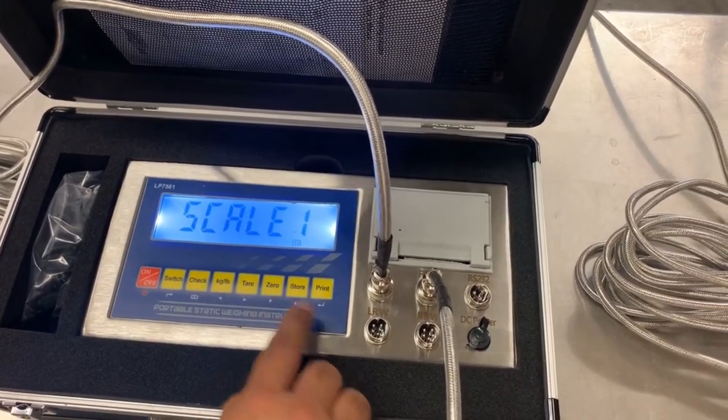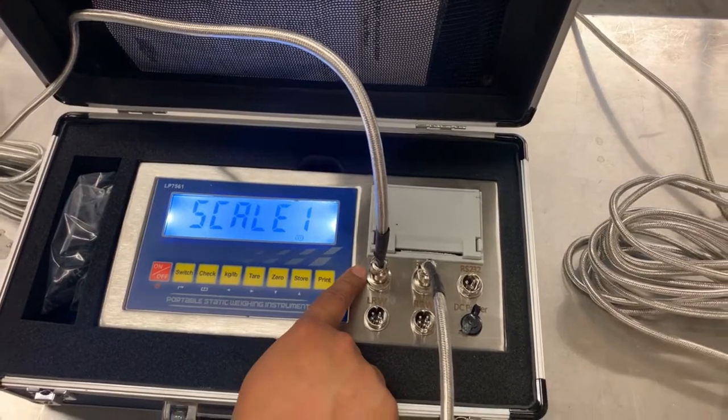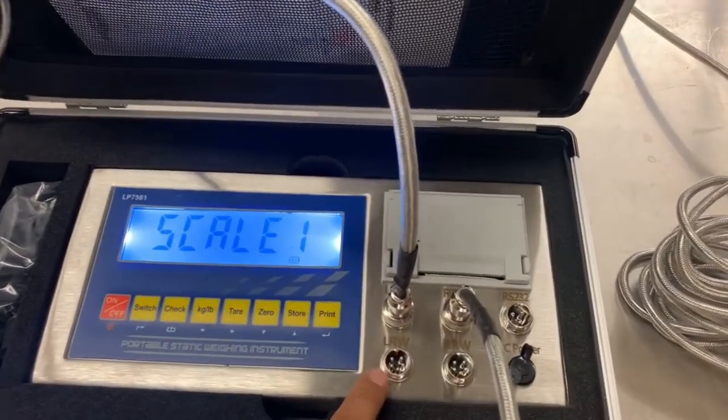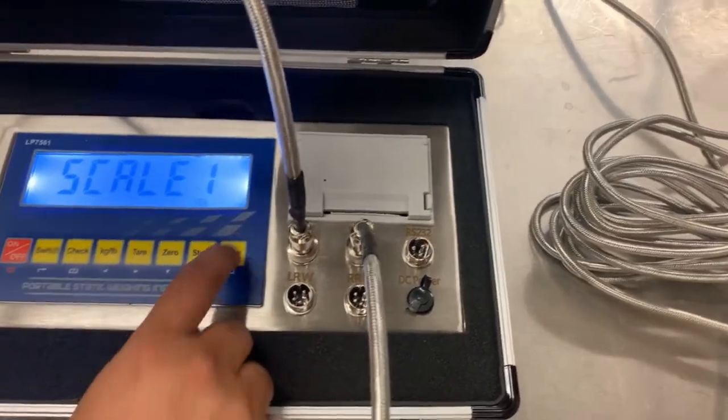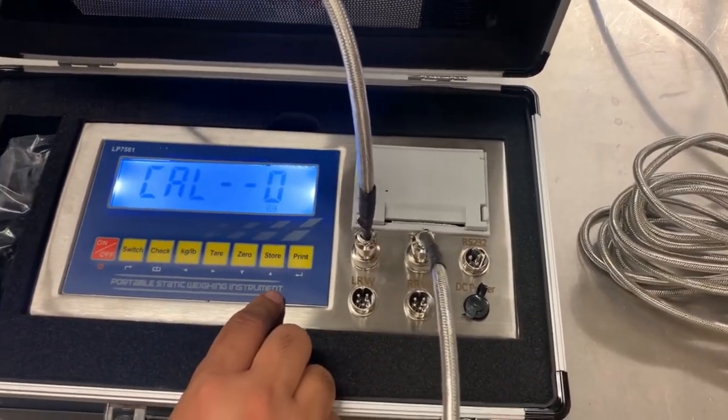The way it works is it's left front wheel, right front wheel, left rear wheel, and right rear wheel. Scale one will be left front wheel. We'll press print. Make sure there's nothing on the scale and press one.